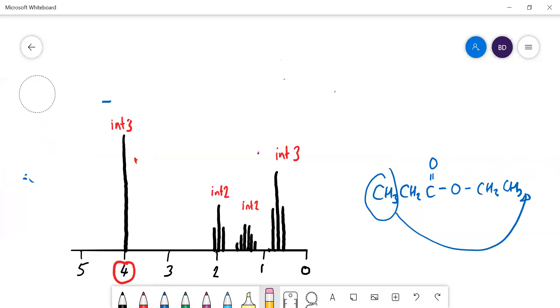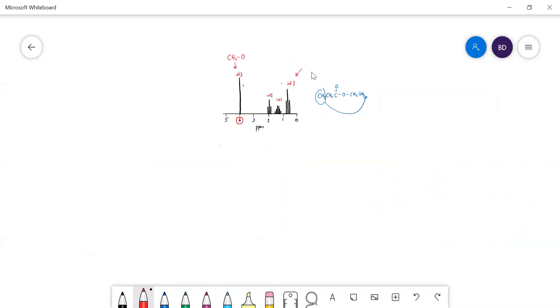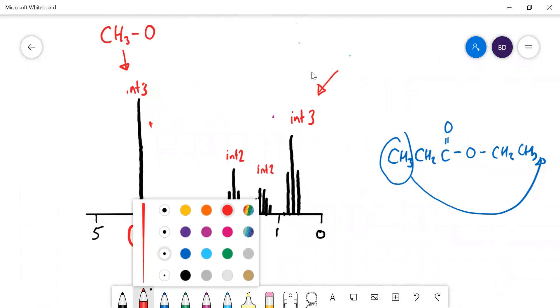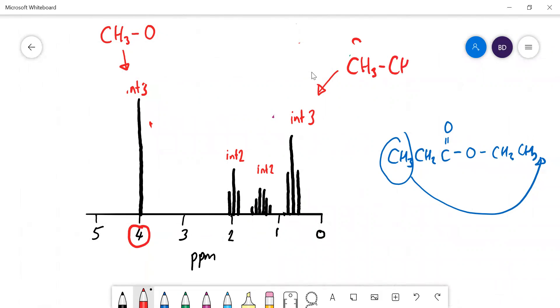So we have got CH3O, that's what that one is. Let's have a think about this one here. It's a CH3 because it's got an integrated value of three, and it's got a splitting, it's a triplet. So that is probably a CH3 next door to a CH2. Having these two hydrogens here would split this into a triplet. Let's see if we can locate where that is then.